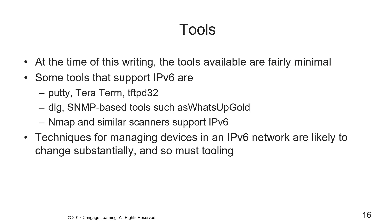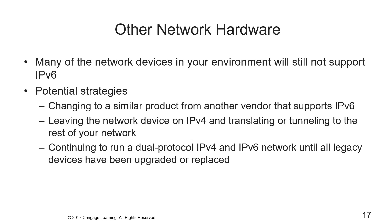Some tools that support v6 are the latest versions of PuTTY, TeraTerm, TFTPD32, FTPD32, dig, SNMP tools like What's Up, nmap, and other scanners. You have to gather all these tools for your deployment and figure out what you need and when. The techniques for managing devices in an IPv6 network are likely to change substantially. For other network hardware, potential strategies include changing to a similar product from another vendor that supports v6, leaving the device on v4 and translating or tunneling, or continuing to run a dual-protocol v4 and v6 network until all legacy devices have been upgraded or replaced.